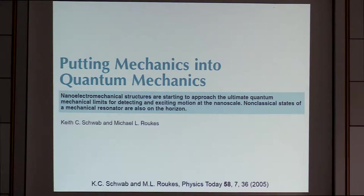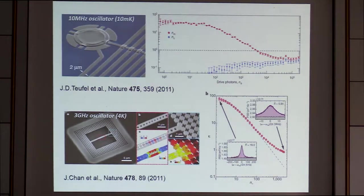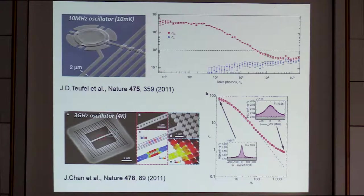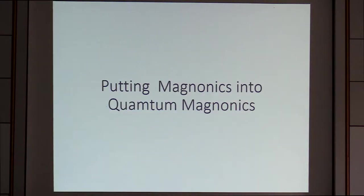It was very much in the stage of infancy. But now, in 2018, we have witnessed tremendous development, like those two milestone experiments of ground state cooling of mechanics. And people now start to talk about entanglement between two separate mechanical oscillators. We are more or less interested in spins and magnons, so the natural question is whether we can put magnonics into quantum magnonics. That's my topic.